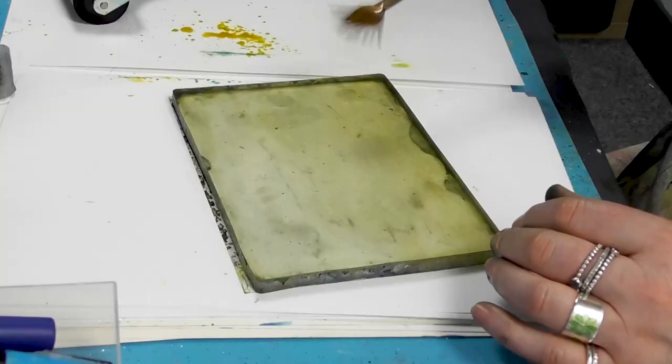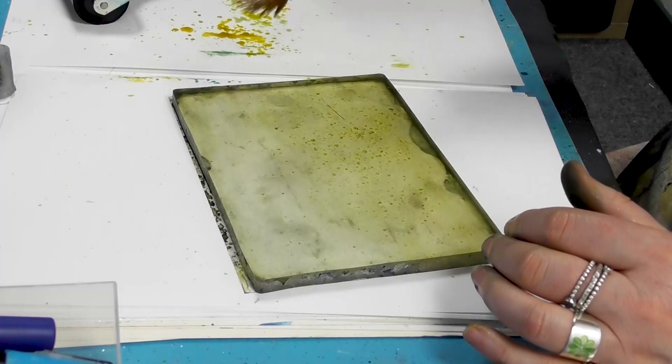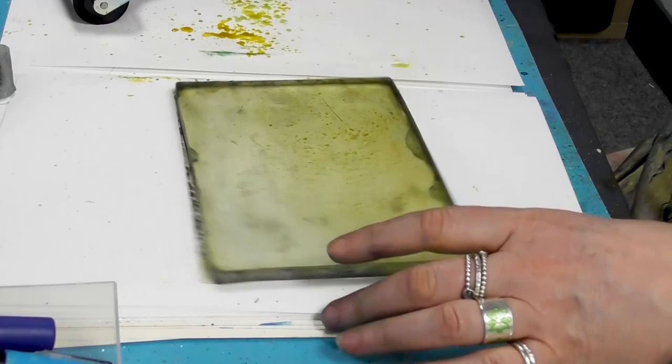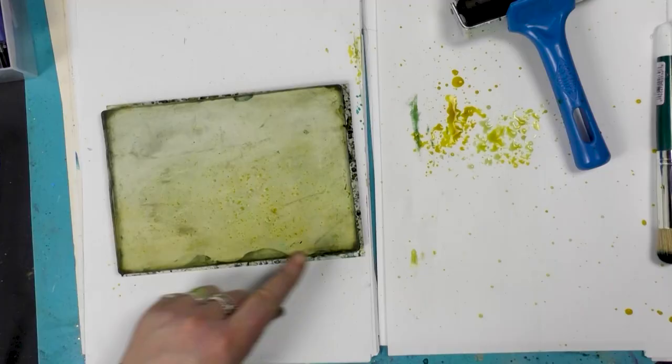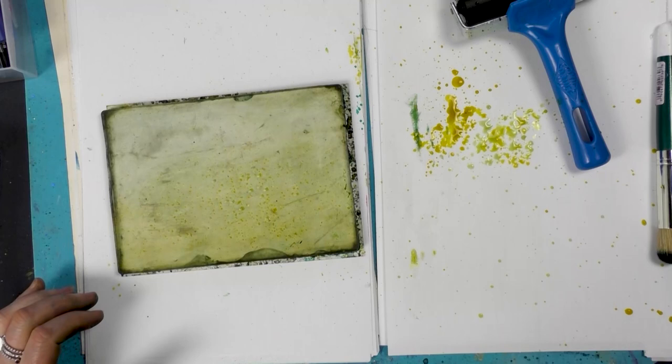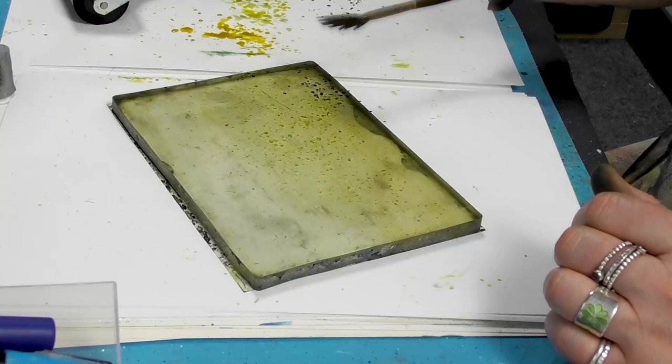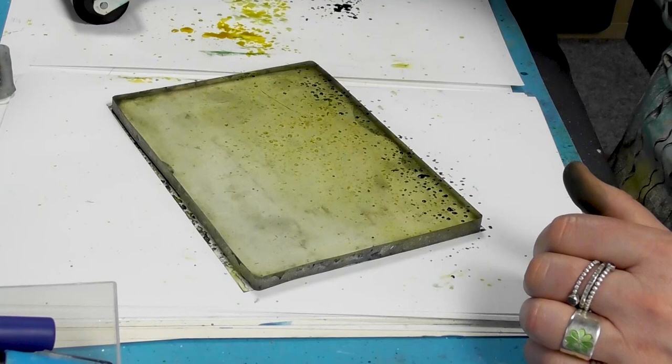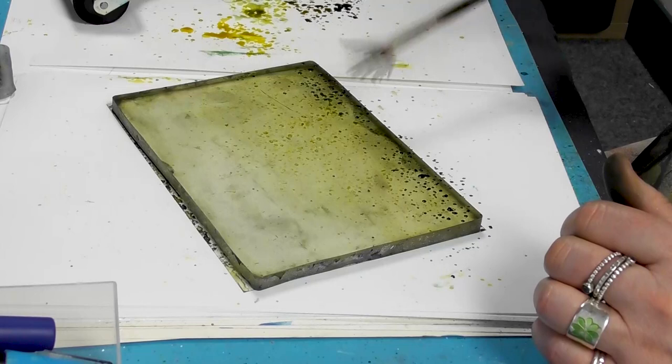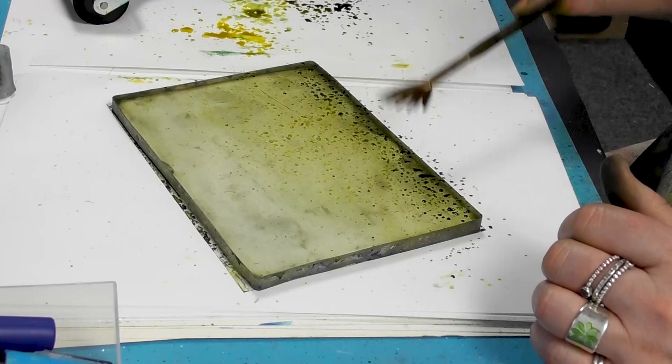I've got some yellow Brusho watered down here and I'm just going to pop that down, and then I want a darker color down at the bottom here. I'm going to go with the grey.